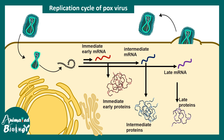Once there are sufficient enzymes, structural proteins, matrix proteins, and enough genetic material, the virus can be replicated and reassembled to form an entirely new viral particle, which can then be released. This is how the poxvirus or variola virus replication cycle works.